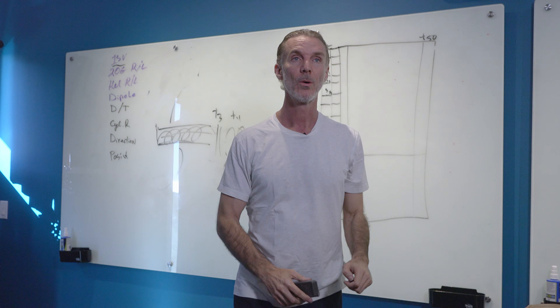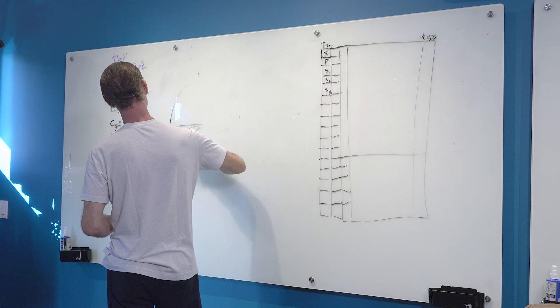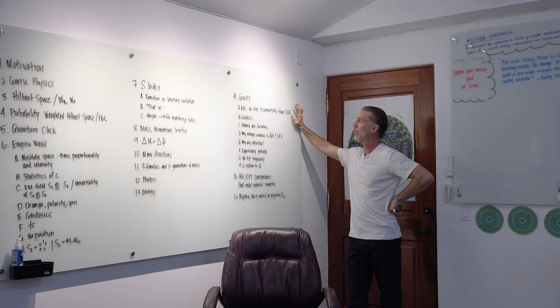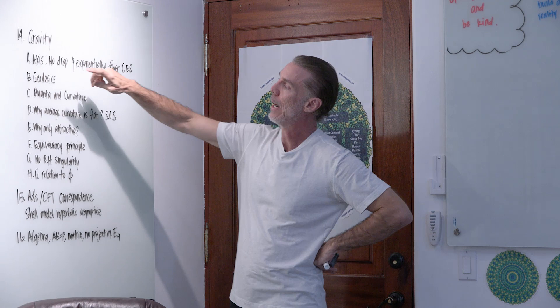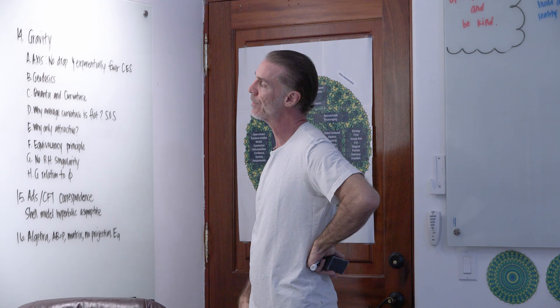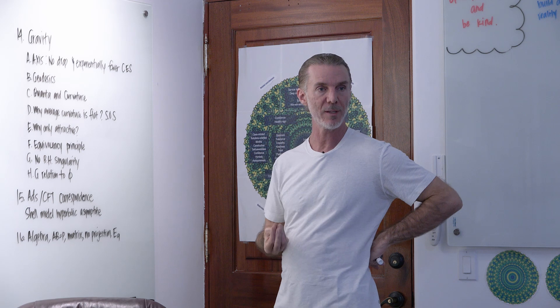We're almost done — we've gotten to point 13 on the list, and now we're at gravity, though we've talked a lot about gravity prematurely. We talked about the axis, the story about the helices, why things move in elliptical or geodesic-like paths, quanta of curvature in Richard and Fong's paper, and this idea that maybe we're going to end up with a quantum of three-space curvature as our fundamental building block.